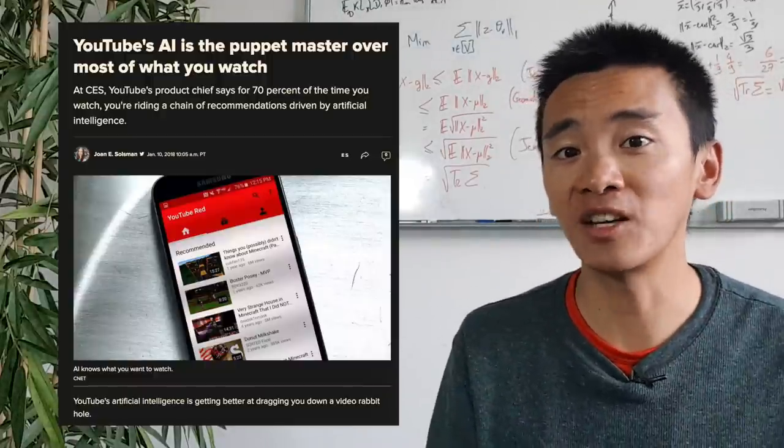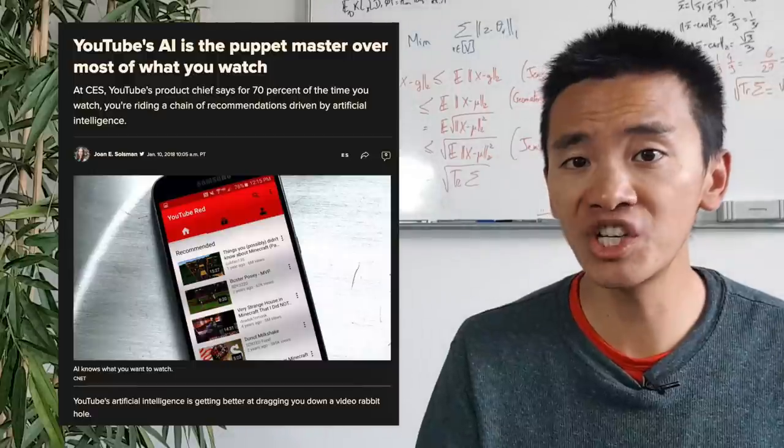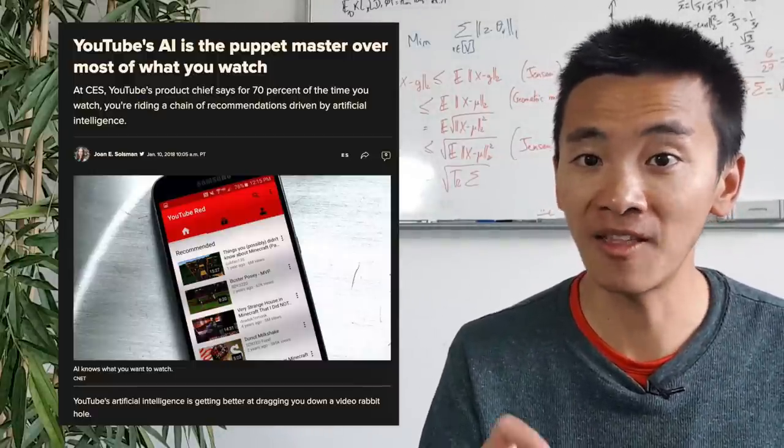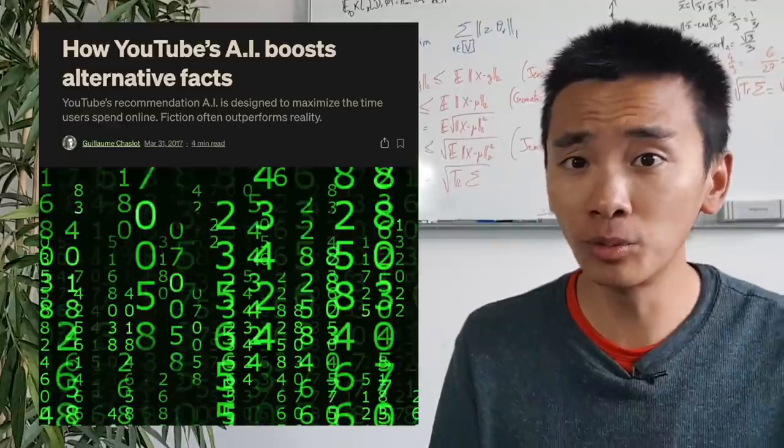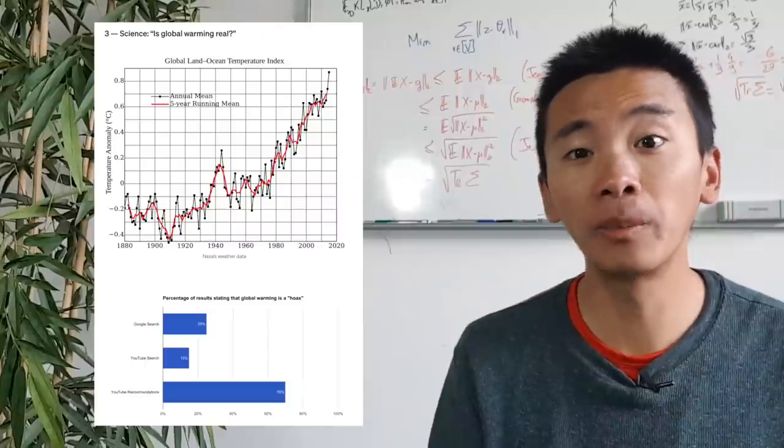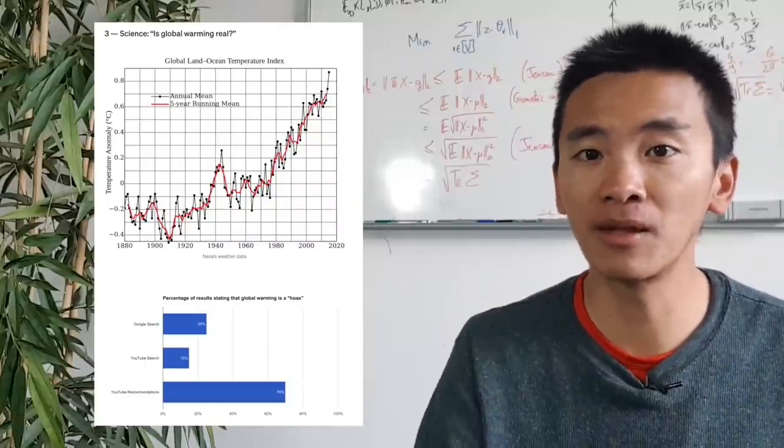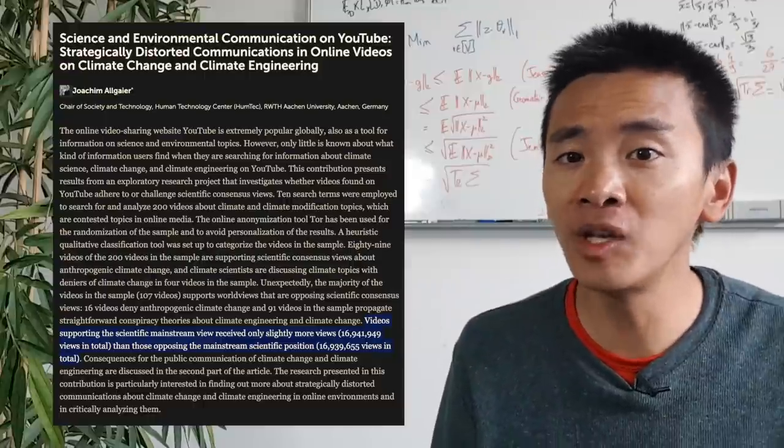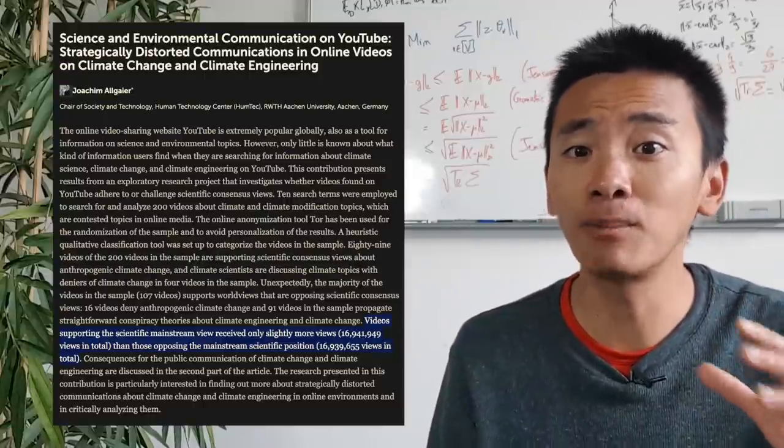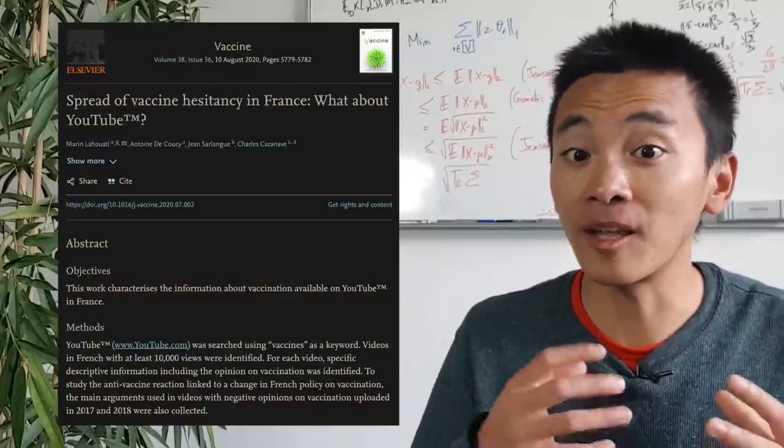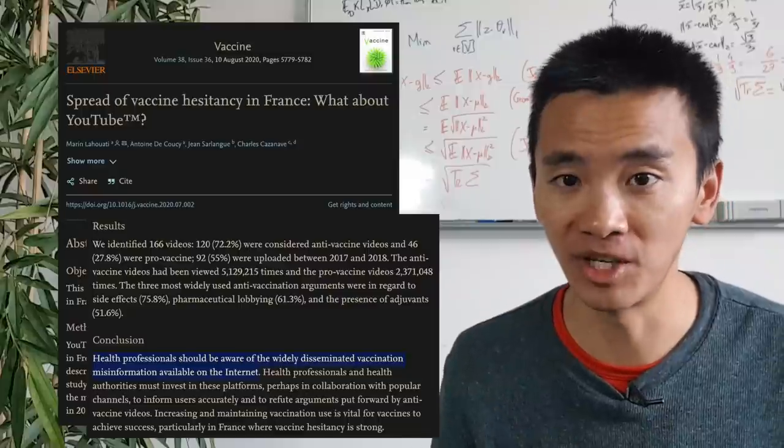In other words, two times out of three, when an individual watches a video, it's because YouTube's algorithm recommended that video. However, numerous researches show that the impact of this algorithm has long been catastrophic with conspiracy theories that make millions, if not billions of cumulative views, videos that deny climate change that make almost as many views as those that explain it, and content that propagates dangerous public health misinformation.